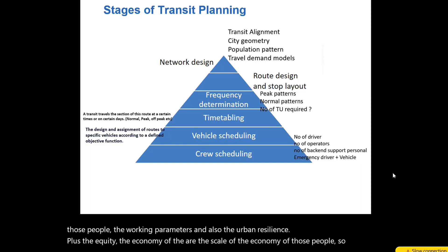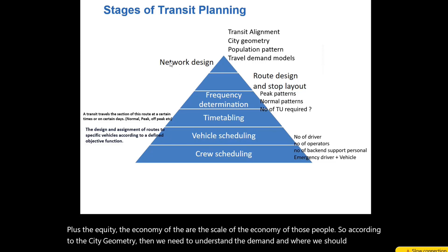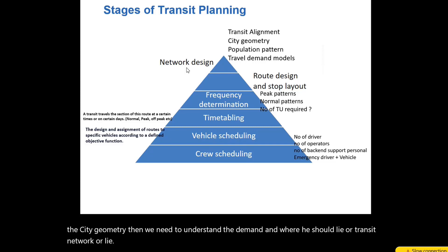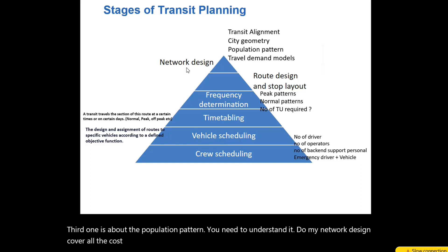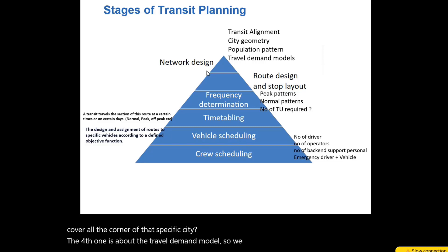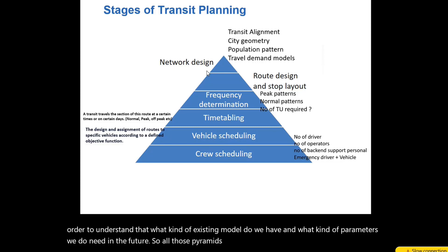According to the city geometry, we then need to understand the demand and where we should lay our transit network or line. The third element is the population pattern — we need to understand whether our network design covers all corners of that specific city. The fourth element is the travel demand model. We have different demand models to understand what kind of existing models we have and what parameters we will need in the future. All those parameters are related to the network design.